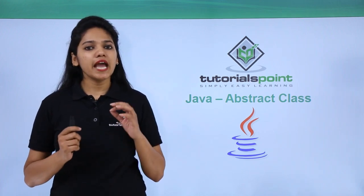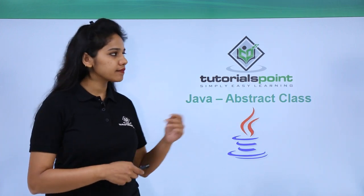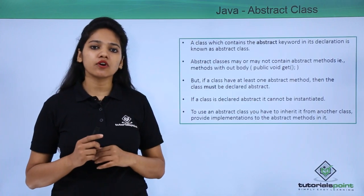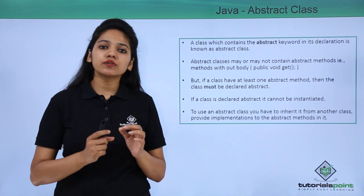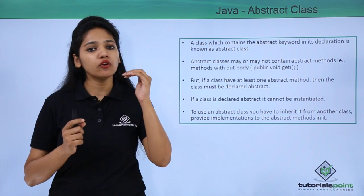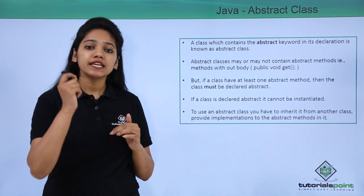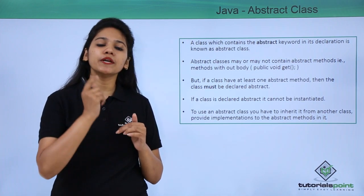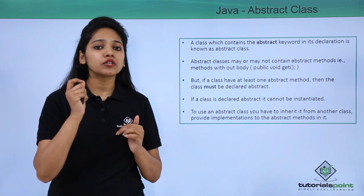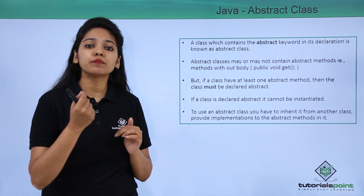The first concept in abstraction is the abstract class. Abstraction is where you define your abstract class and methods — you are declaring the blueprint of what the class will do, but you are not defining exactly how it will perform.